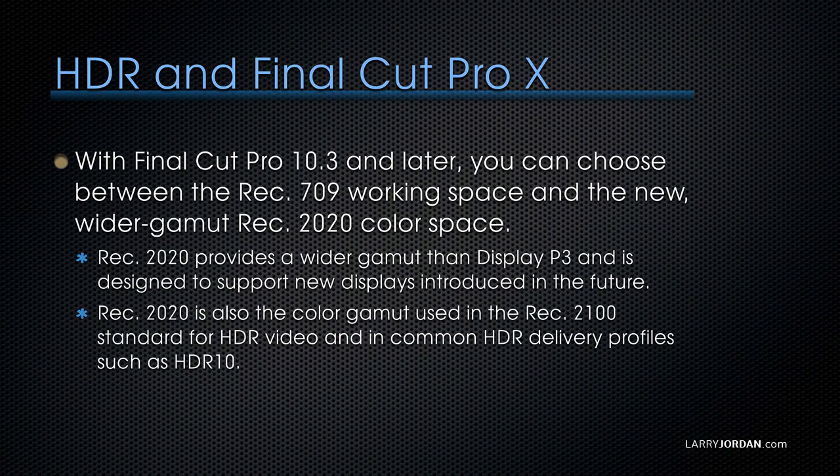With Final Cut Pro X and later, you can choose between working in Rec. 709 — that's HD — and the new wider gamut Rec. 2020 color space. Rec. 2020 provides a wider color gamut than DisplayP3, and it's designed to support new displays introduced in the future. Right now, we can't make backlights much brighter than they are, which means we can't hit full HDR brightness levels, but Rec. 2020 gives us room to grow into that spec.